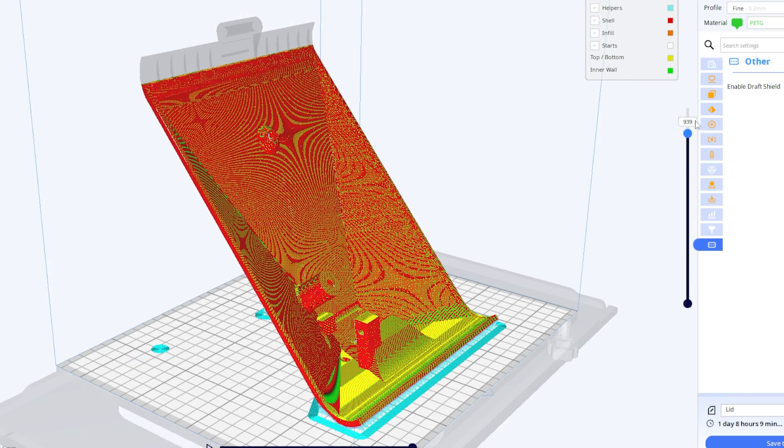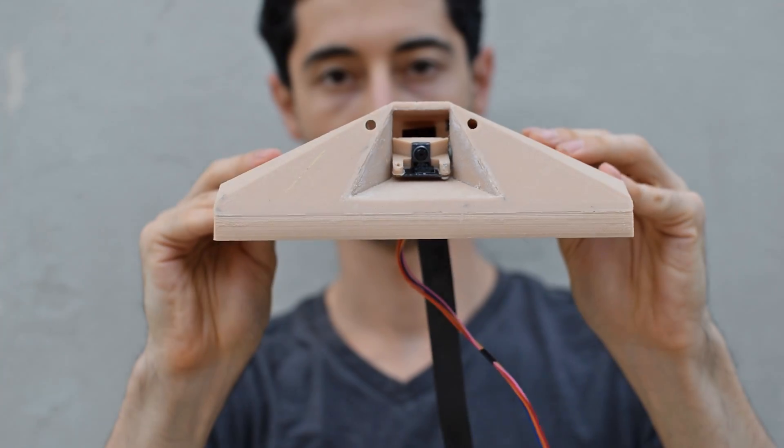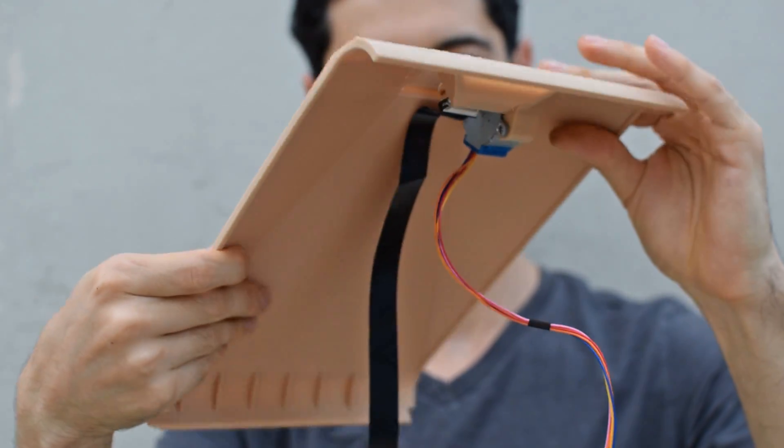I 3D printed this part, which was added to the build, as well as an acrylic lens that would fit over the rotating camera at an angle to protect it from dust and debris.